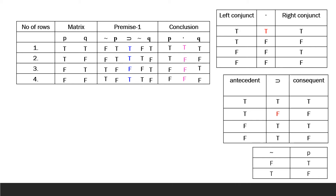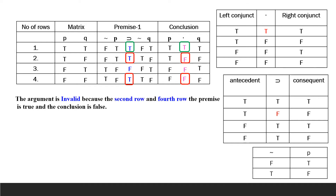Now we check whether the argument is valid or invalid. In the first row, the premise is true and the conclusion is true. In the second row, the premise is true but the conclusion is false. In the fourth row, the same situation occurs. Since we have found the invalidity condition in at least one row — specifically rows 2 and 4 — the argument is invalid.